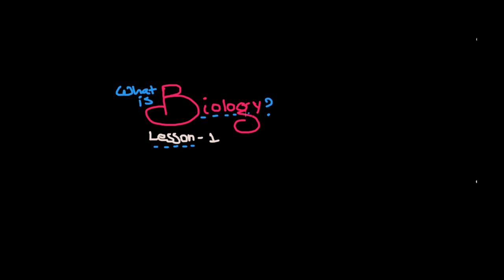What is biology? So, science in general - science can be divided into two main categories. Social science and natural science.